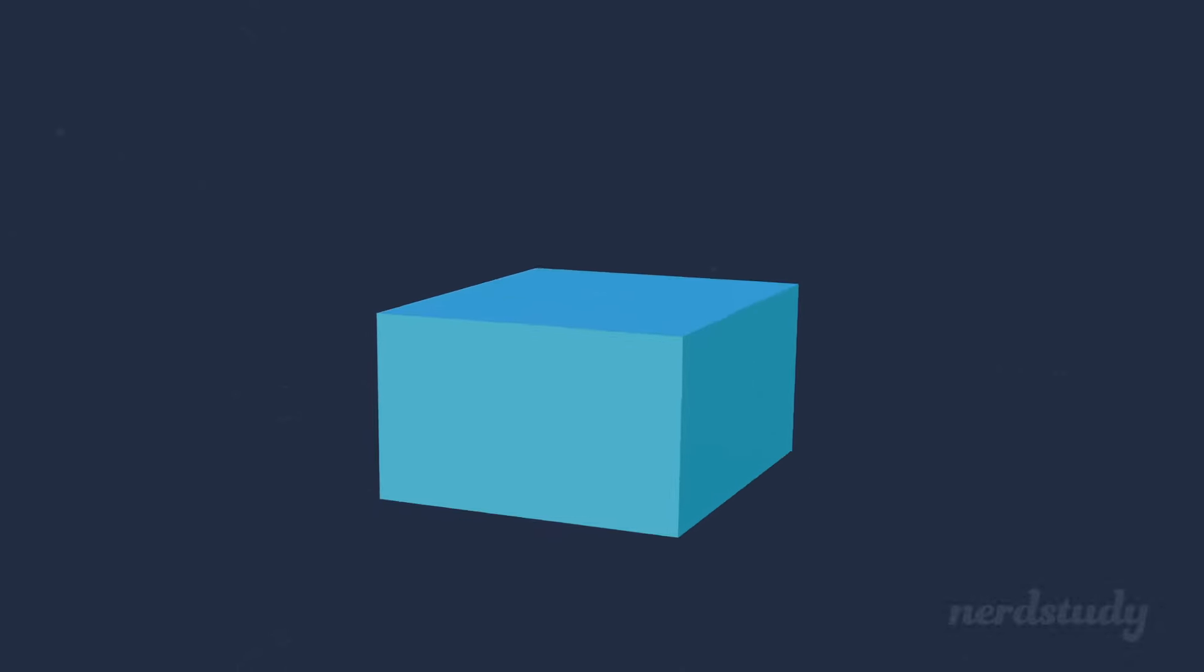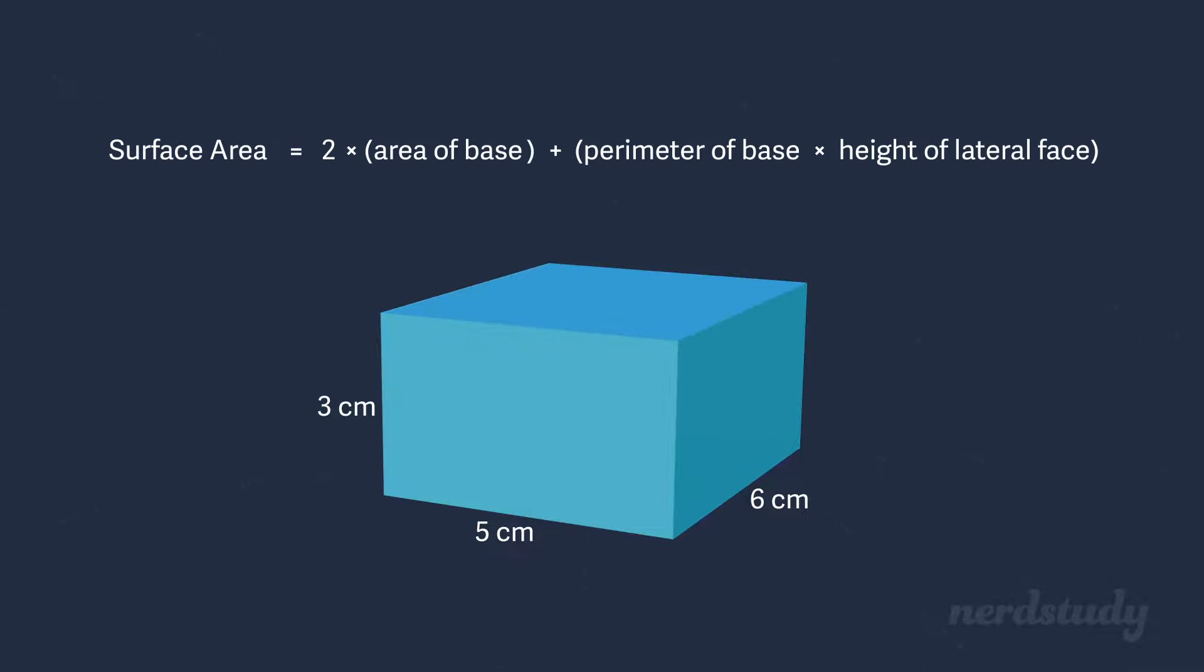Great, now let's find the surface area of a rectangular prism. This should be fairly easy now that we've got experience with the triangular prism already. So again, here's our formula for finding the surface area of a prism: two times the area of the base plus open bracket perimeter of base multiplied by height of lateral face closing bracket.